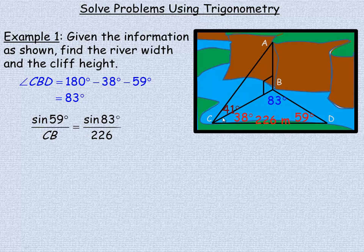In order to find CB, CB is opposite the 59 degree angle. So we write sine of 59 over CB, the side we're trying to find, equals sine of 83 over 226. That's how the sine law works. The sine of an angle over its opposite side is equal to the sine of another angle in the triangle over its opposite side.